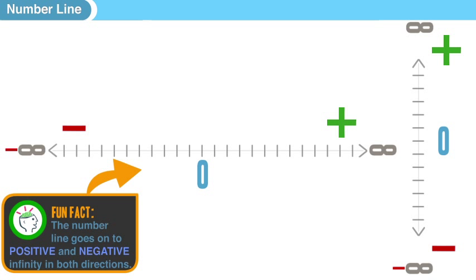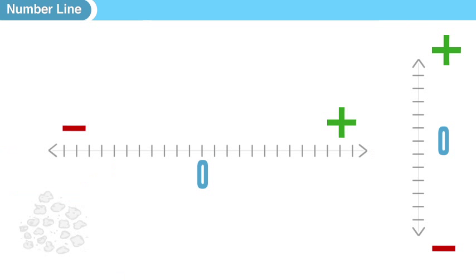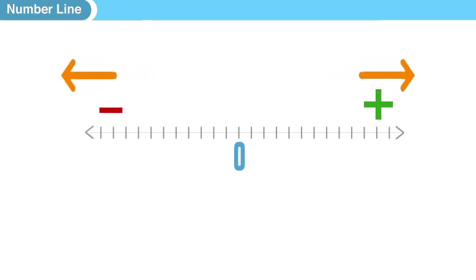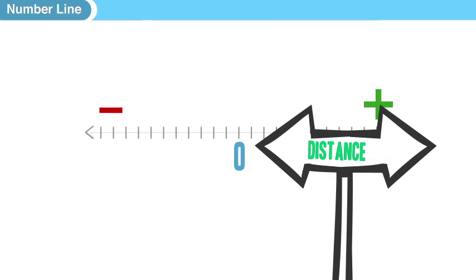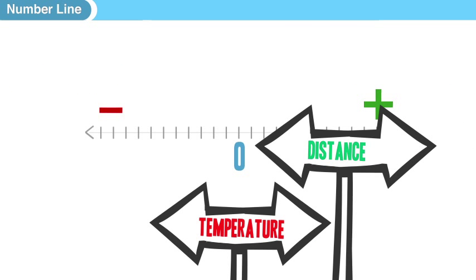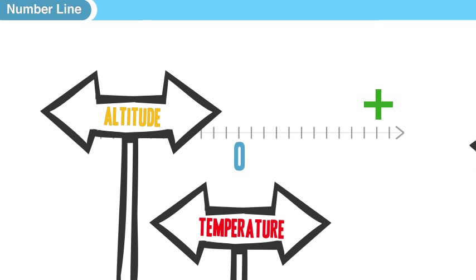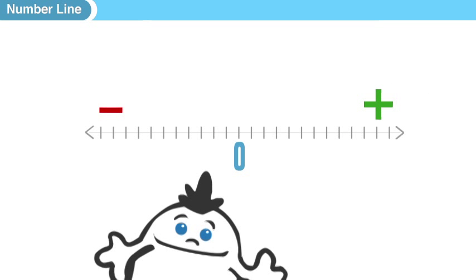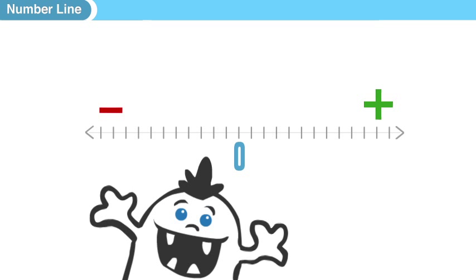Now let's look at a few real-world applications of the number line — what do we use it to represent? The number line is useful for visualizing anything that happens in two opposite directions, things like distance, temperature, altitude, and money — where it can go one way or the other.